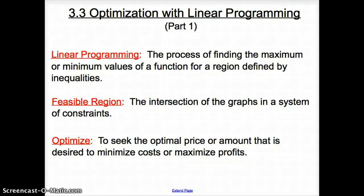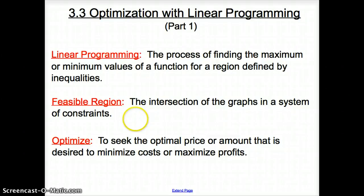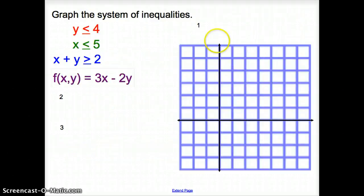Welcome to the first part of Section 3.3, Optimization with Linear Programming. We're going to start with a couple vocab words. The first is linear programming, which is the process of finding the maximum or minimum values of a function for a region defined by inequalities. Next is feasible region, which is the intersection of the graphs in a system of constraints — constraints being inequalities. And finally, optimize, which is to seek the optimal price or amount to minimize costs or maximize profits.